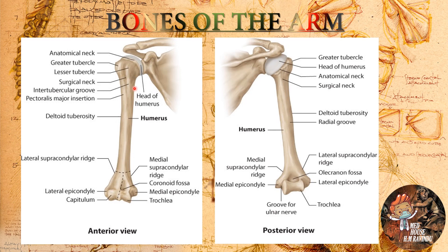In the anterior view, at the proximal end, we start with the head of the humerus. After the head we can see the anatomical neck, then the greater tubercle and lesser tubercle. In between the tubercles we have the intertubercular groove. Here we can see the surgical neck and the deltoid tuberosity.